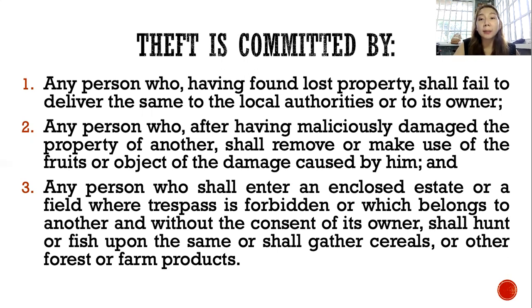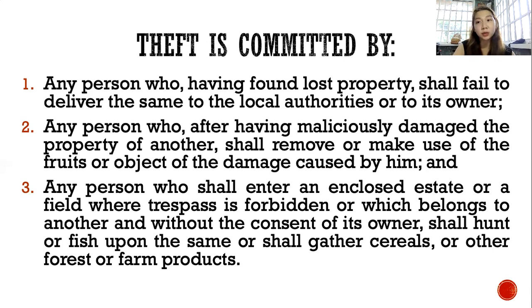In Valenzuela v. People, the Supreme Court ruled that there is no crime of frustrated theft — there is only attempted theft and consummated theft. In that case, the offender took boxes of items from SM North EDSA and placed them in a taxi, but before leaving the premises of SM, they were already apprehended. The offenders were charged with consummated theft; their defense was frustrated theft. The Supreme Court ruled that in theft, unlawful taking is deemed complete the moment the offender gained possession of the property of another — unlike robbery, which has frustrated and attempted stages. Here, it's only attempted theft or consummated theft.